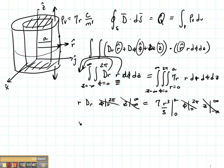And what I'm going to get is R D_R is equal to 7 A cubed over 3. D_R then is going to be 7 A cubed over 3 R. This gives me my electric flux density any place on the outside of this cylinder.